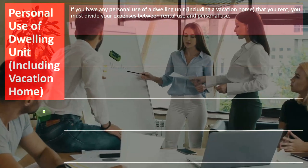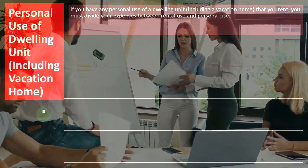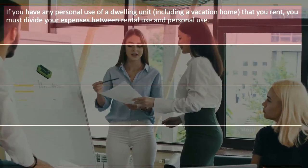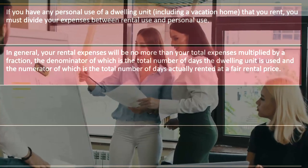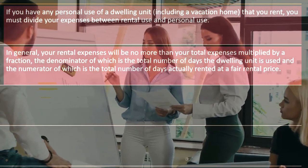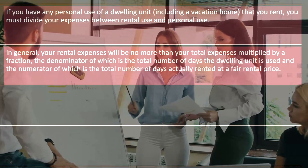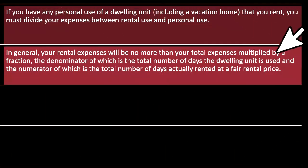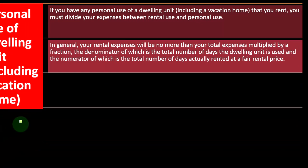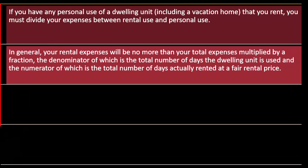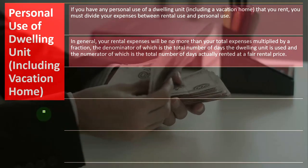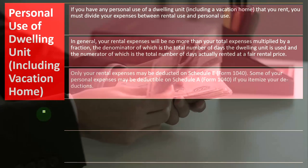Here we're talking about the vacation home situation. If you have any personal use of a dwelling unit, including a vacation home that you rent, you must divide your expenses between rental use and personal use. Notice it says expenses — not income — because income is all from rental. Your rental expenses will be no more than your total expenses multiplied by a fraction: the denominator is the total number of days the dwelling unit is used, and the numerator is the total number of days actually rented at a fair rental price. We need a ratio analysis to break out these expenses.